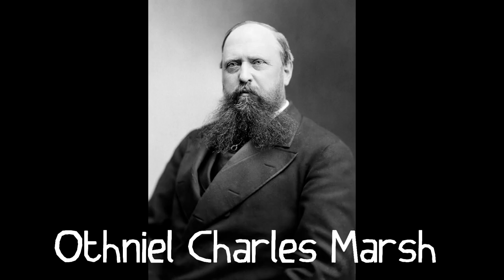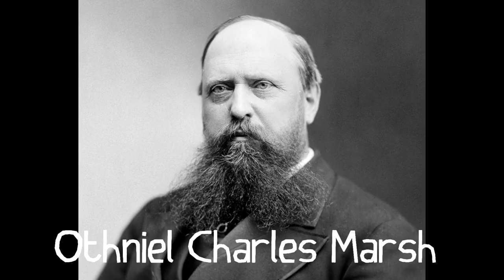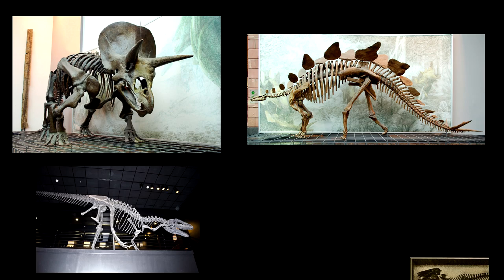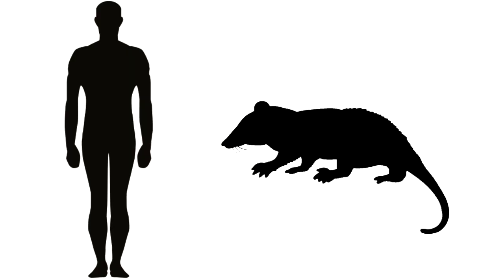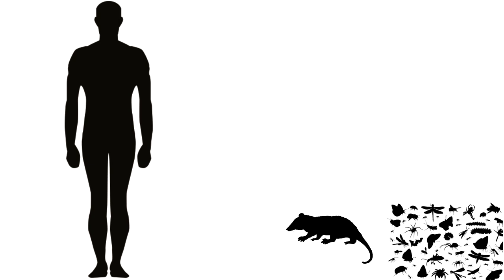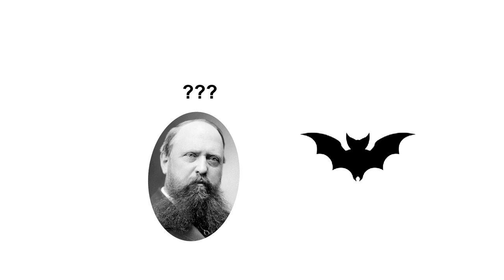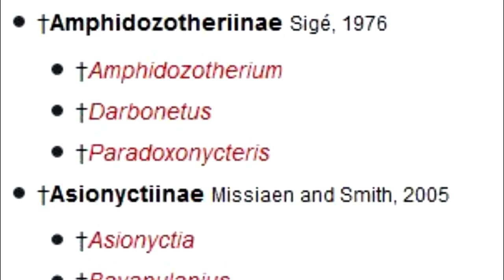The genus Nyctytherrium was first described in 1872 by Othniel Charles Marsh, one of the preeminent paleontologists of his time, well known for first describing many dinosaur genera but also many other prehistoric animals. Nyctythereids were small insectivorous animals of the order Eulipotyphla, but when Marsh described them, he thought they'd be bats, based on similarities of their teeth.